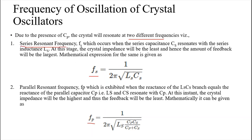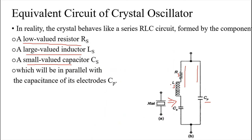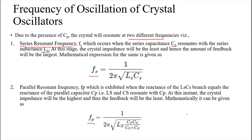For the series resonance frequency, you make the reactance of Cs equal to the reactance of Ls, i.e., these two values cancel each other. The series resonance frequency formula is: fs = 1 / (2π √(Ls·Cs)), which is the standard LC circuit formula applied to only the series elements Ls and Cs.